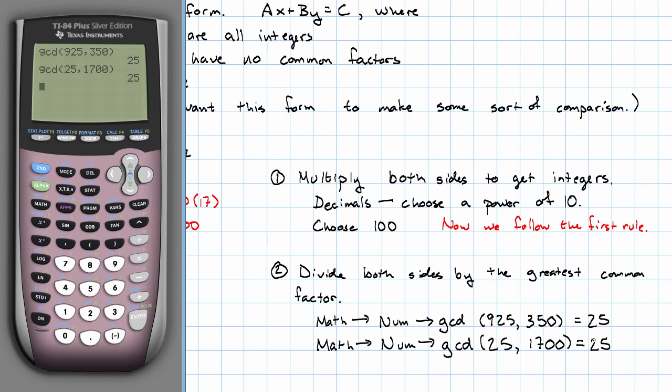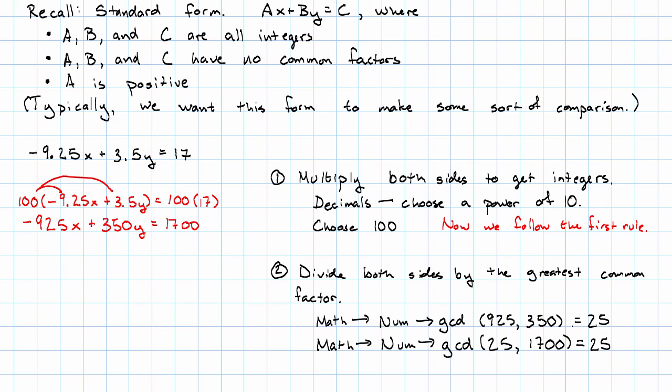Still 25. And maybe you knew that by looking. That's fine. That gives us the GCD of all three numbers. To find the GCD of three numbers, we find the GCD of the first two, and then of that number and the third.